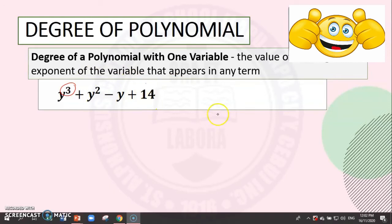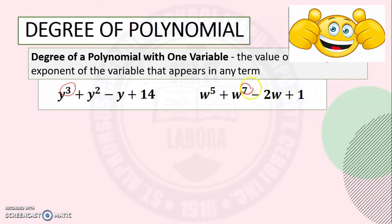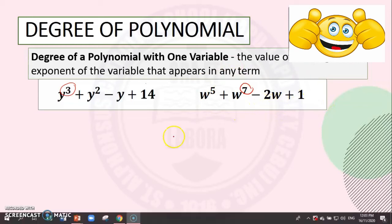Let's have another example: w exponent 5 plus w exponent 7 minus 2w plus 1. We just need to find the largest exponent, which is 7. So the degree of this polynomial is 7.